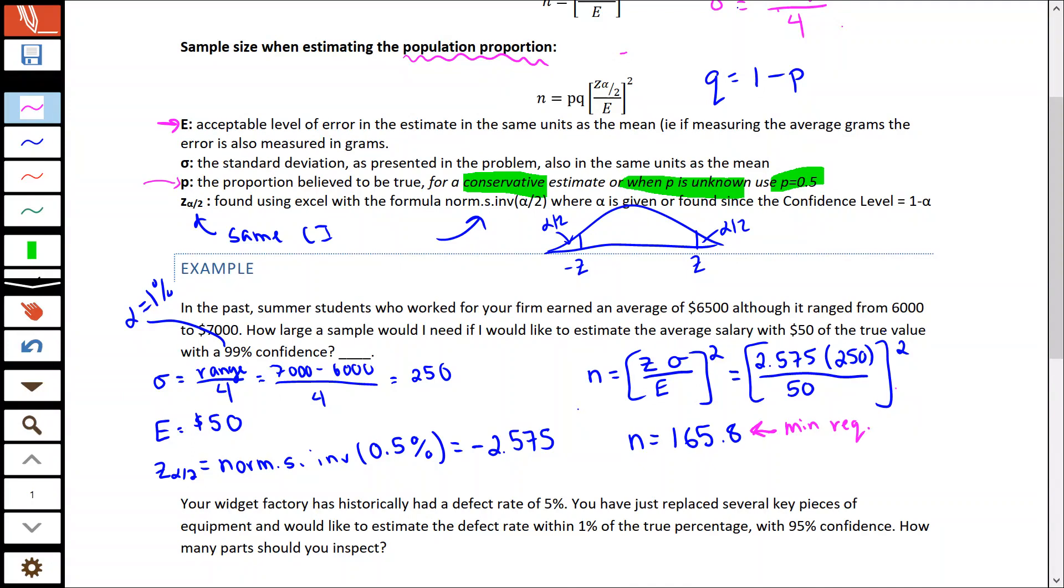Now we have to recognize that this is a minimum requirement. It's the minimum requirement to meet our level of 99% confidence. But the issue is we can't sample 165.8 people - we can't go talk to 0.8 of a person, which means when it comes to doing sample sizing, you're always going to round up. Always going to round up. So in this case, our sample size is going to be 166 in order to satisfy our requirements there.